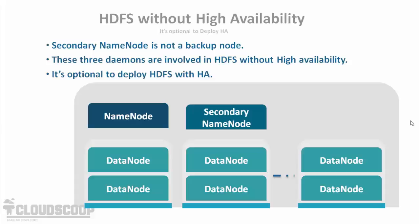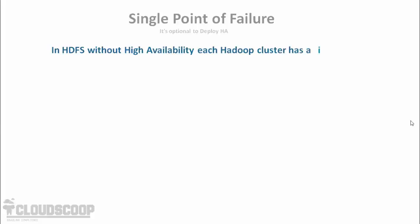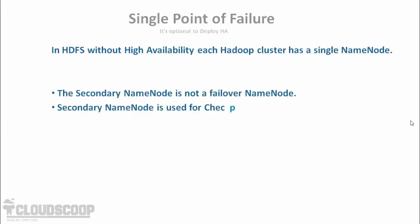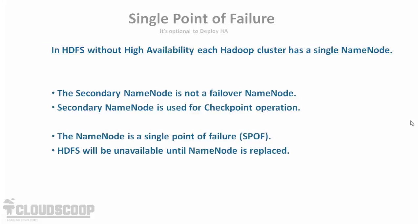While configuring Hadoop, initially it is not necessary to deploy HDFS with a highly available configuration. As you can see, these are the daemons involved in an HDFS cluster without high availability: name node, secondary name node, and data node. When we configure HDFS without high availability, each Hadoop cluster has only a single name node, and the secondary name node is used for checkpoint operations — it is not a backup, recovery, or failover node.